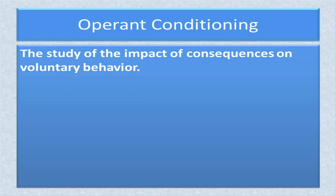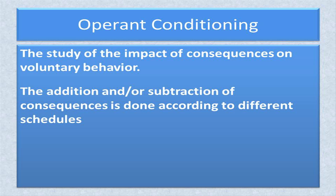Remember that operant conditioning is a study of the impact of consequences on voluntary behavior. A consequence is a stimulus that, when it follows a response, will change the likelihood that response will occur again. This presentation will focus on the schedules that are used when adding or subtracting consequences. There are two basic categories.